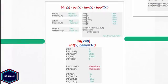Now let's move to the next function. The bin function, short for binary, takes an integer number as an argument and converts it into a binary string. In this example I am passing integer 10 as an argument and the bin function has converted it to a binary string.